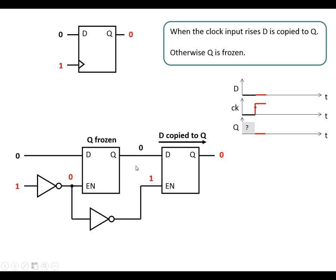Now if we change D, because we've got a 0 at the enable of the first latch, Q is frozen — the 0 stays in the middle and gets copied across to the output. So a change at D doesn't even get past the first latch.